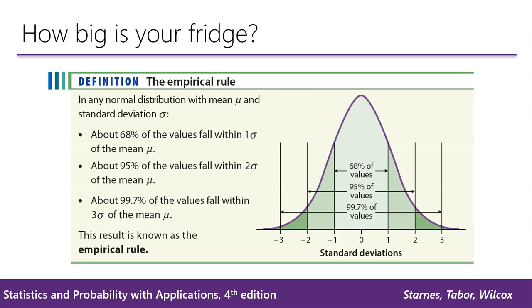So we're going to use the empirical rule to solve this problem. As a reminder, the empirical rule states that in any normal distribution with a mean of mu and a standard deviation sigma, that about 68% of values fall within one standard deviation of the mean, and about 95% of values fall within two standard deviations of the mean, and about 99.7% of values fall within three standard deviations of the mean.